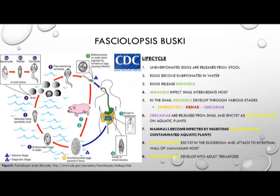The life cycle begins when the unembryonated egg is released from the stool of the infected host. That egg then becomes embryonated in the water, and eggs then release the miracidia. The miracidia infects the snail intermediate host, where it develops through various stages — going through sporocysts, developing into rediae, and then finally cercaria. That cercaria is then released from the snail and encysts as a metacercaria on aquatic plants.